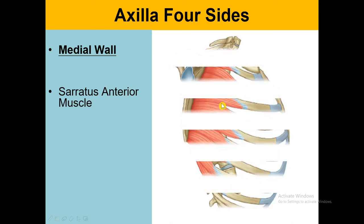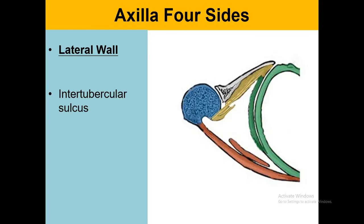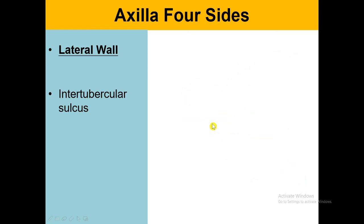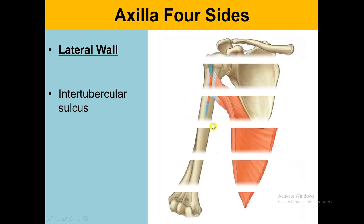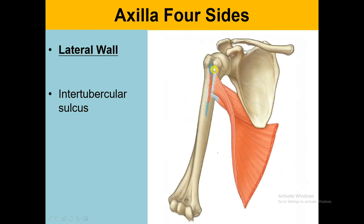Let's talk about the lateral wall. In this diagram it is represented in blue, showing the intertubercular sulcus from the proximal part of the humerus. We have the intertubercular sulcus between the two tubercles.